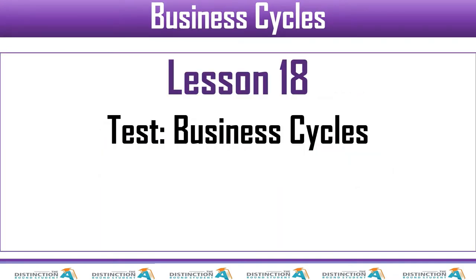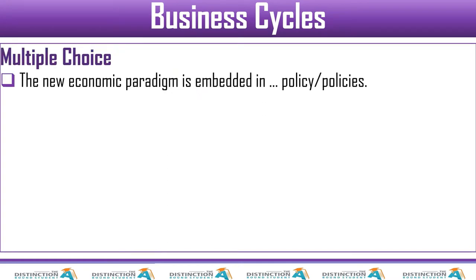That's lesson number 18 from the textbook. For multiple choice, I always say: do not look at the options first. Try to answer the question without looking at them. Once you have the answer in your head, then check the options — they'll confirm your answer. The chances that you are wrong after having the answer in your head and finding it in the options are very slim.